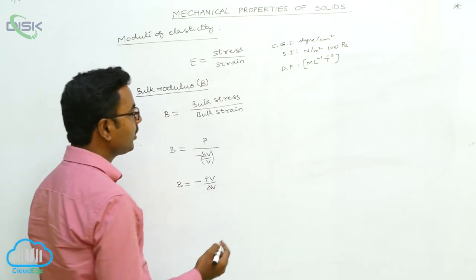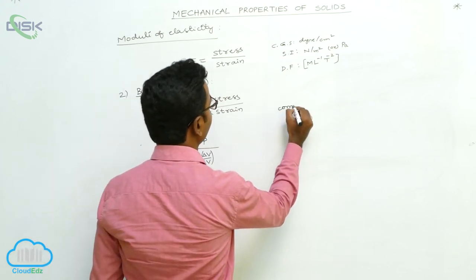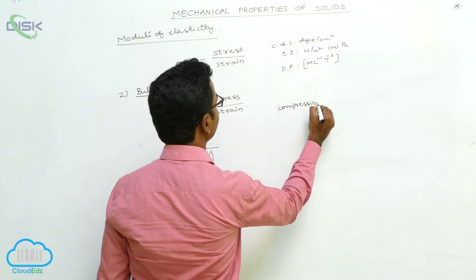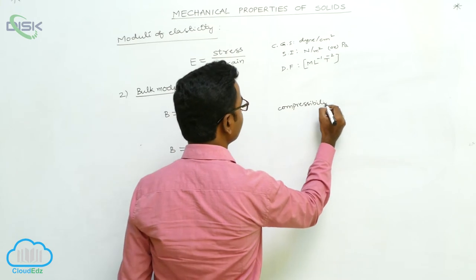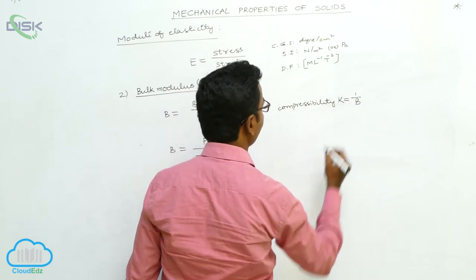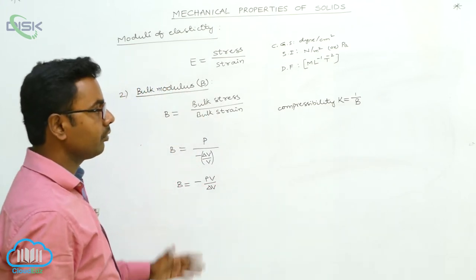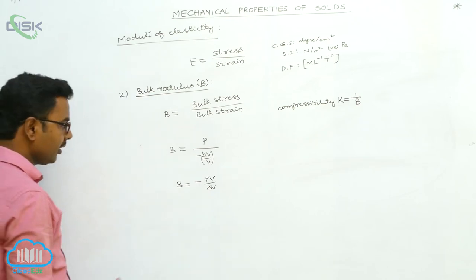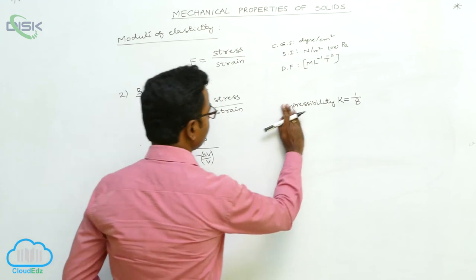The reciprocal of Bulk Modulus is called compressibility. Compressibility K is equal to one divided by Bulk Modulus.